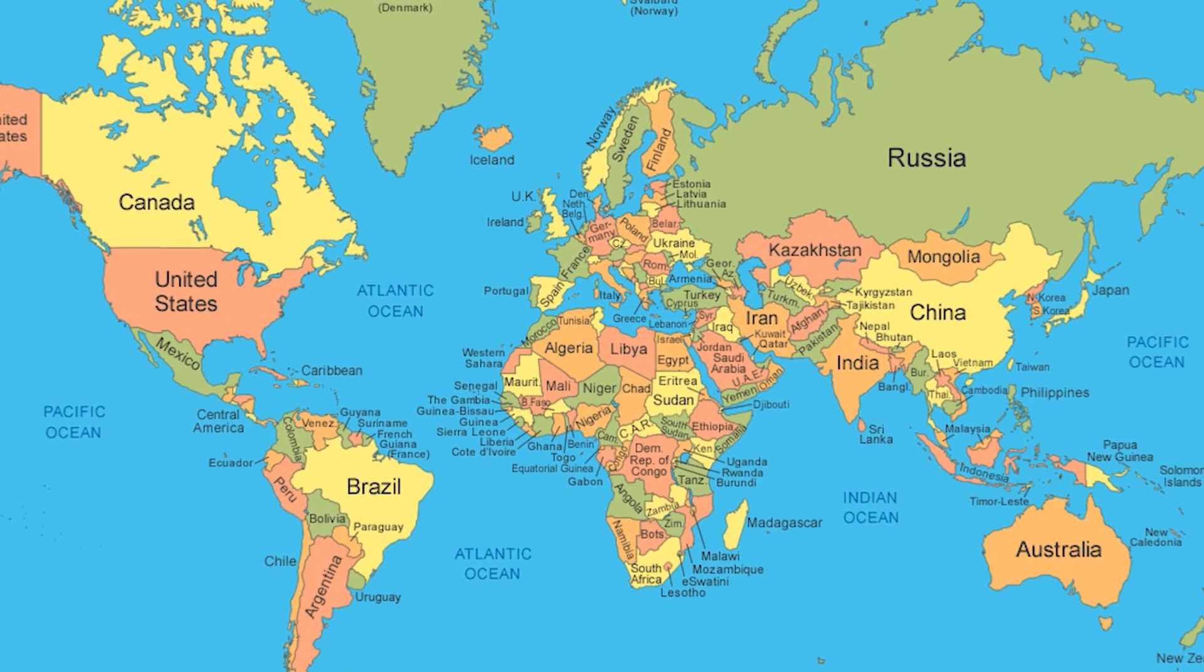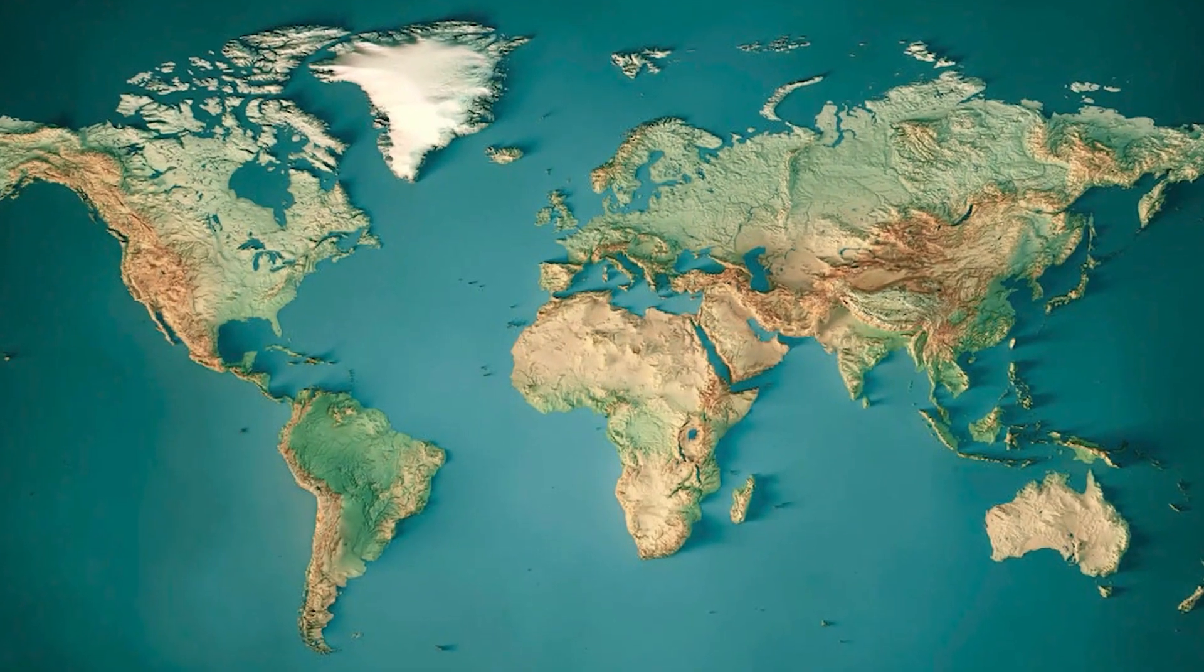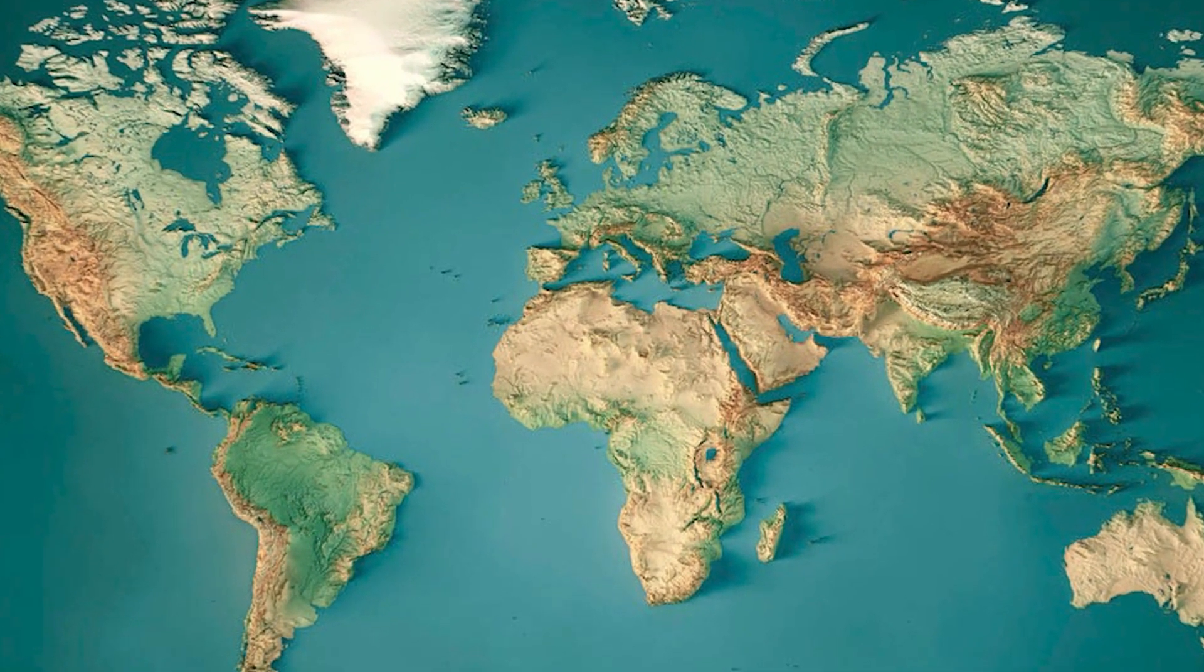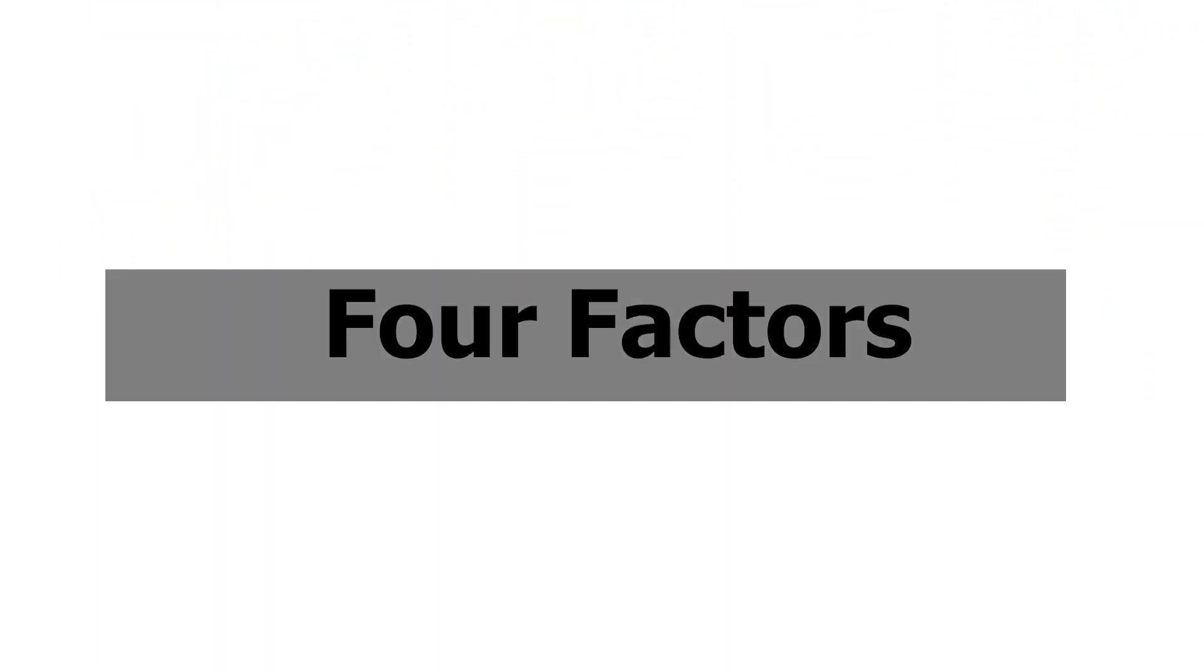The world map that you've looked at your entire life is lying to you. The Mercator projection map created by cartographer and Flemish geographer Gerardus Mercator has wrong representations of four factors.